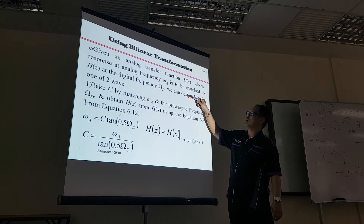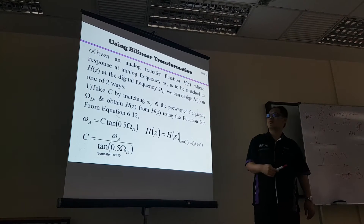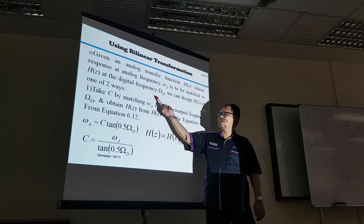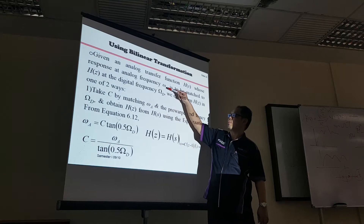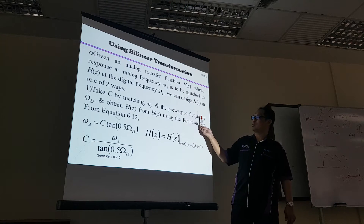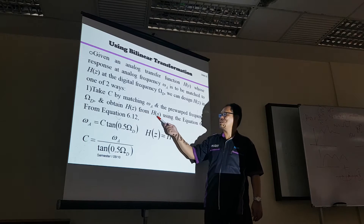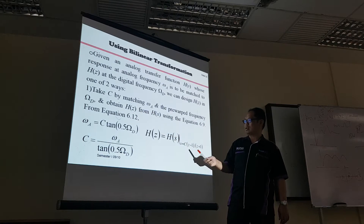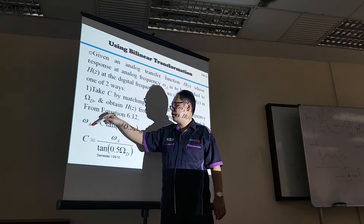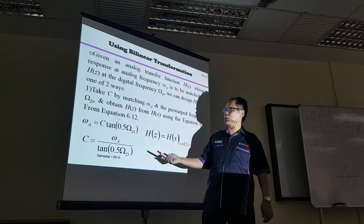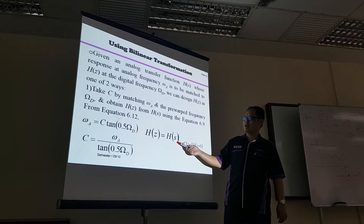To design H(Z) with digital frequency, we can use two methods. Method 1: take C, match it with Ω_A, pre-warp the frequency Ω_D, then obtain H(Z) from H(S) using the bilinear transformation. To find Ω_A, use the formula C·tan(0.5·Ω_D), then match H(Z) with H(S).